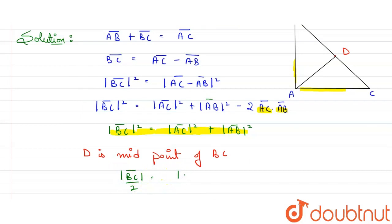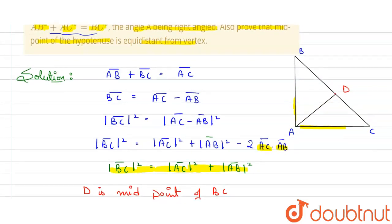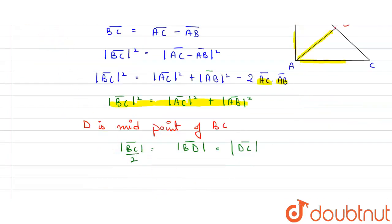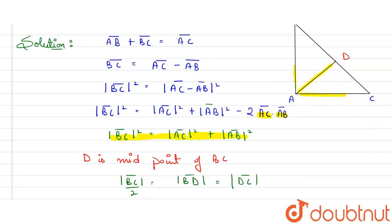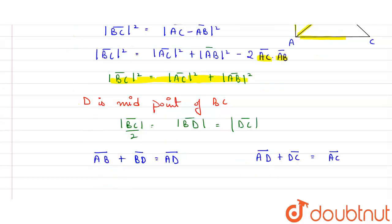The magnitude of BD vector also equals the magnitude of DC vector. Now consider triangles ABD and ADC. In triangle ABD, the resultant AD vector equals AB vector plus BD vector. In triangle ADC, AD vector plus DC vector equals AC vector.